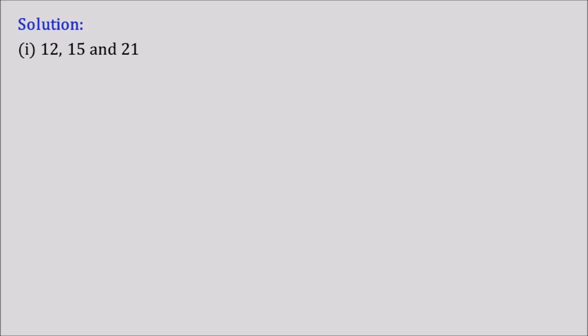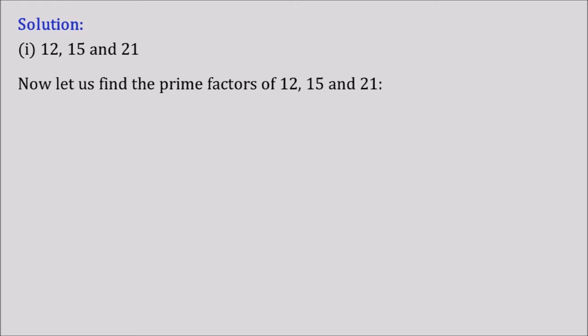This is very easy — it is similar to what we did for two numbers, and here we are going to apply the same thing for three numbers. Now let us find the prime factors of 12, 15, and 21. Coming to 12, we get the prime factors as 2 × 2 × 3 × 1, that is equal to 2 to the power 2 into 3 to the power 1.